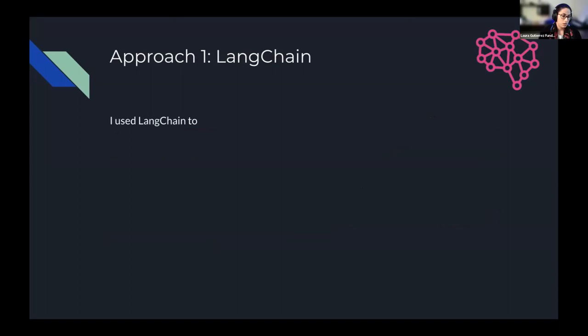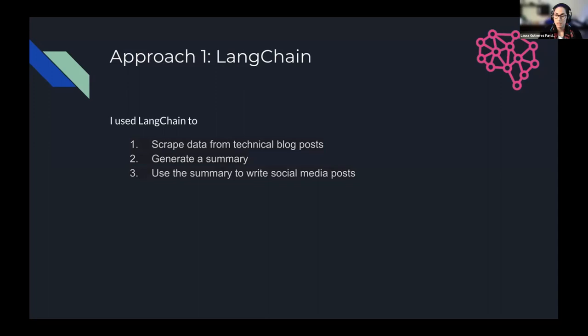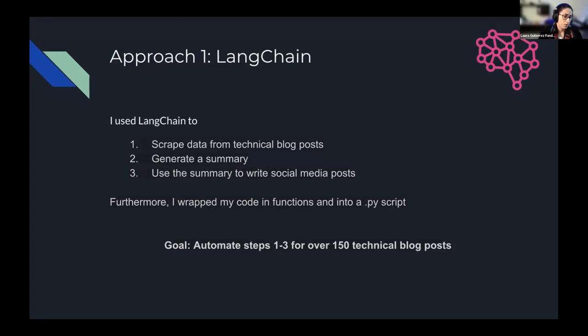The first approach I took was with LangChain. I went and did some data scraping from the technical blog posts, then generated a summary with the agent, and used that summary to write the social media post. Essentially, I got my agent to look at the web page, tell me a summary of what's on that page, and then use that summary to generate a fun and enticing social media post. I wrote my code into functions in a .py script with the goal of automating, and I ran this for over 150 technical blog posts.